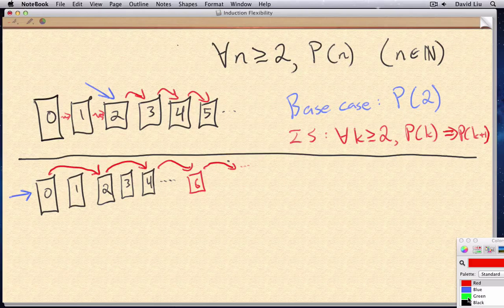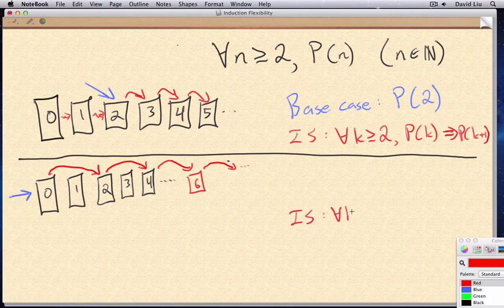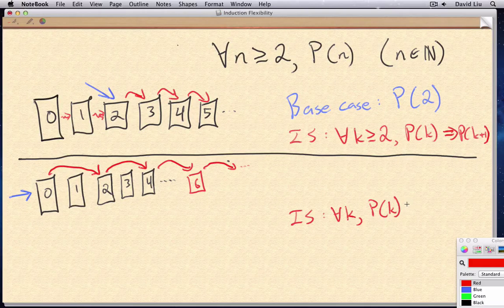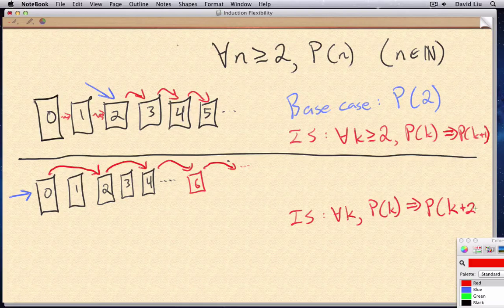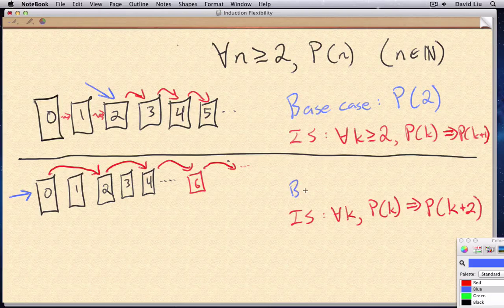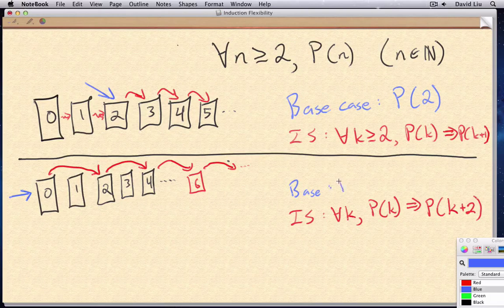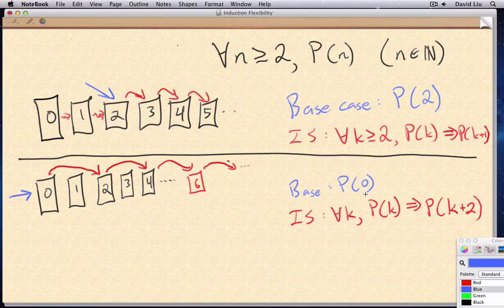That is, if our induction step was now p of k implies p of k plus two, rather than k plus one. And I said our base case is still zero here in this example. So if this happened, what exactly would we be showing?